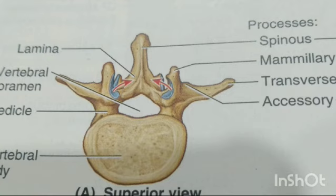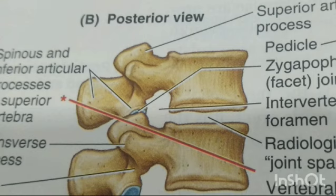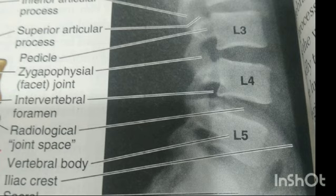The transverse process projects somewhat posterosuperiorly as well as laterally. On the posterior surface of the base of each transverse process is a small accessory process, which provides attachment for the intertransverse muscle. On the posterior surface of the superior articular processes are the small tubercles — the mammillary processes — which give attachment to both the multifidus and intertransverse muscles of the back.